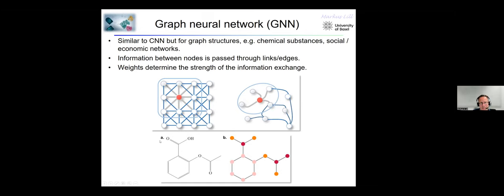Another network we frequently use in chemistry are graph neural networks. They share similarities with convolutional neural networks, where instead of using information from neighboring pixels, you learn about the environment of a node from neighboring nodes connected by edges. This graph representation is very feasible for handling chemicals, where nodes are atoms and edges are chemical bonds. Using graph neural networks, you can obtain a sophisticated featurization of the environment of a functional group or the whole molecule, which can then be used for downstream modeling tasks.